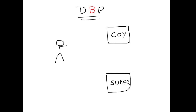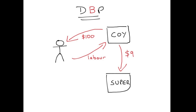Now, defined benefit plan. There's you again, there's your company — you work, you get paid, company puts in $9. That actually works exactly the same. Rob is mainly defined contribution, I'm mainly defined benefit. We work at the same place, we get paid, the university puts money into the super fund, and I think we're in the same super fund. That process works the same regardless of whether it's defined contribution or defined benefit. The fund then goes off and invests that money.